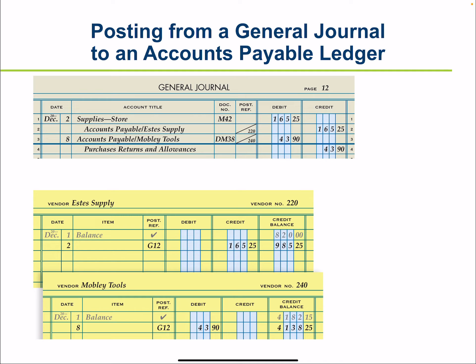Transactions recorded in the general journal can affect both the general ledger and the subsidiary ledger. Buying supplies on account, for example, results in a debit to the general ledger supplies account and also affects the accounts payable account for Estes Supplies. In a computerized system, posting is done automatically and immediately. In manual accounting, general journal transactions may be posted immediately, at the end of the day, or less frequently, but it should be done often to keep vendor accounts up to date.